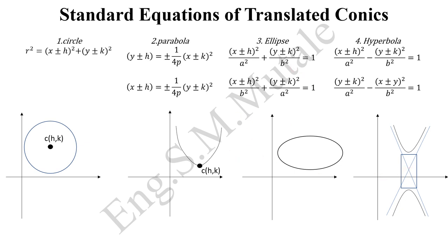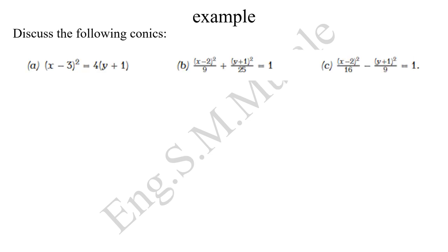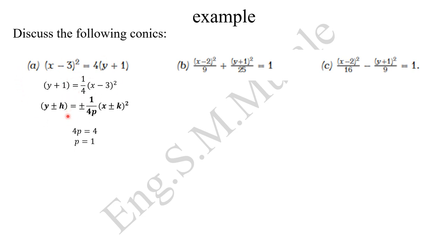Let's look at some examples. From the nature of the first equation you can tell it's a parabola, the second one is an ellipse, and the third one is a hyperbola — but these are not centered at the origin; they have new centers. Starting with the first one, we standardize it by putting it in the standard form of a parabola. From there, equating the coefficient, you discover that p is equal to 1.